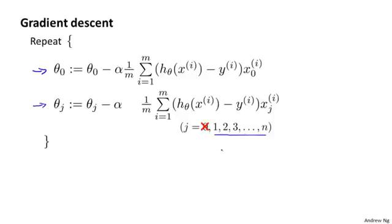The reason I want to do this is you may remember that for our regularized linear regression, we penalize the parameters theta 1, theta 2, and so on up to theta n, but we don't penalize theta 0. So when we modify this algorithm for regularized linear regression, we're going to end up treating theta 0 slightly differently.